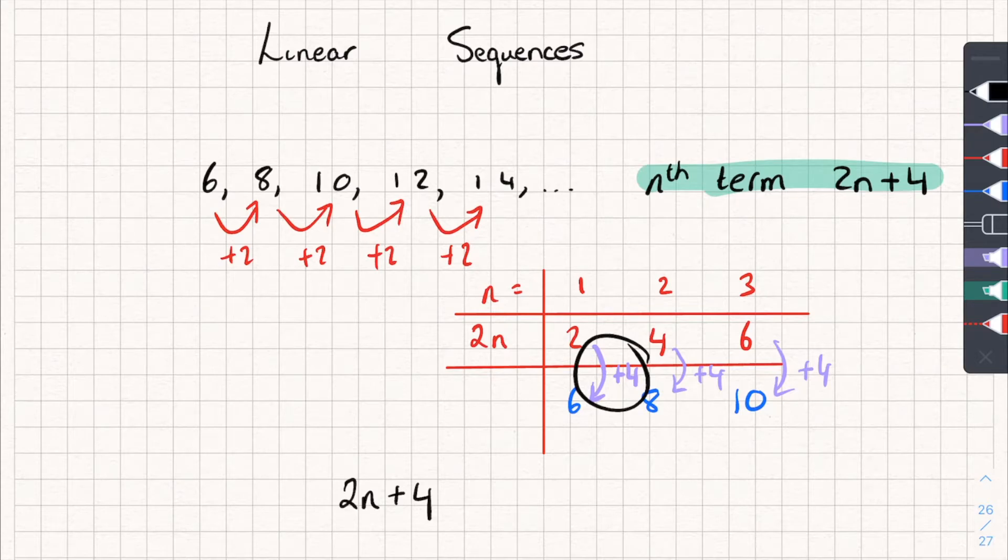And that's how we work out the nth term of a linear sequence. Pretty easy stuff. I'll do one more example. Say we have a sequence like this, 15, 10, 5, 0, and so on. And we want to find the nth term of this sequence.